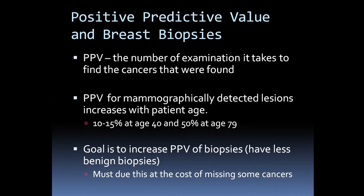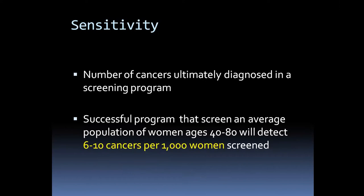One concern with percutaneous biopsies is that with surgical biopsies you could see the entire lesion. We want to look at the positive predictive value (PPV) of breast biopsies — the number of examinations it takes to find cancers. The PPV for mammographically detected lesions increases with patient age: 10–15% at age 40 and up to 50% at age 79. The goal is to increase PPV of biopsies and reduce benign biopsies, while not missing malignancies. We're always going to have some false positives because we don't want to miss cancers.